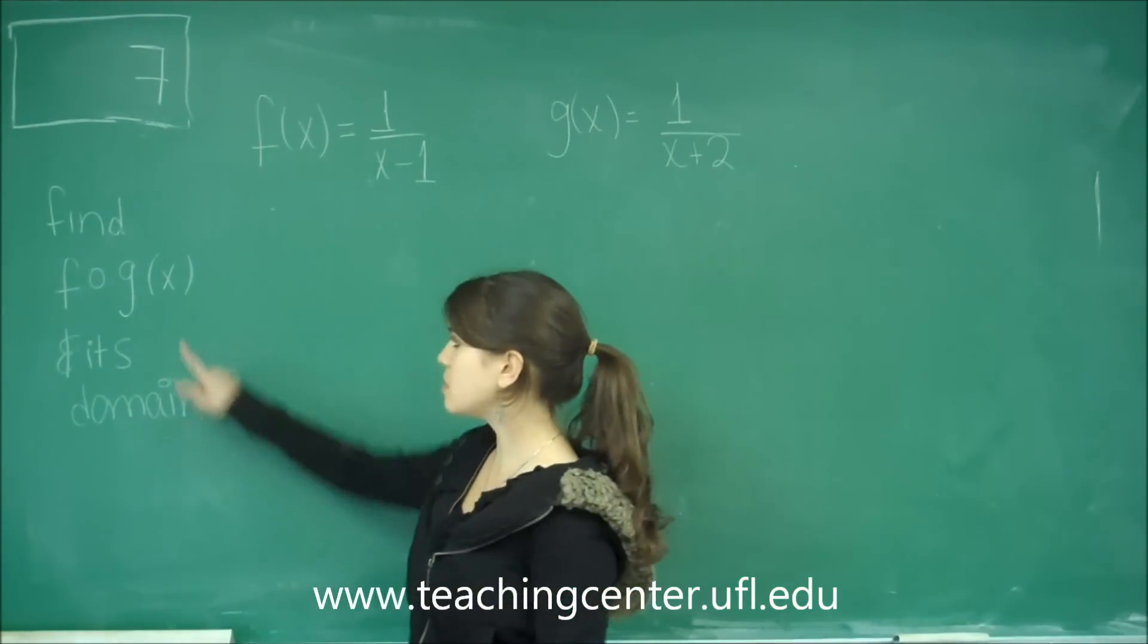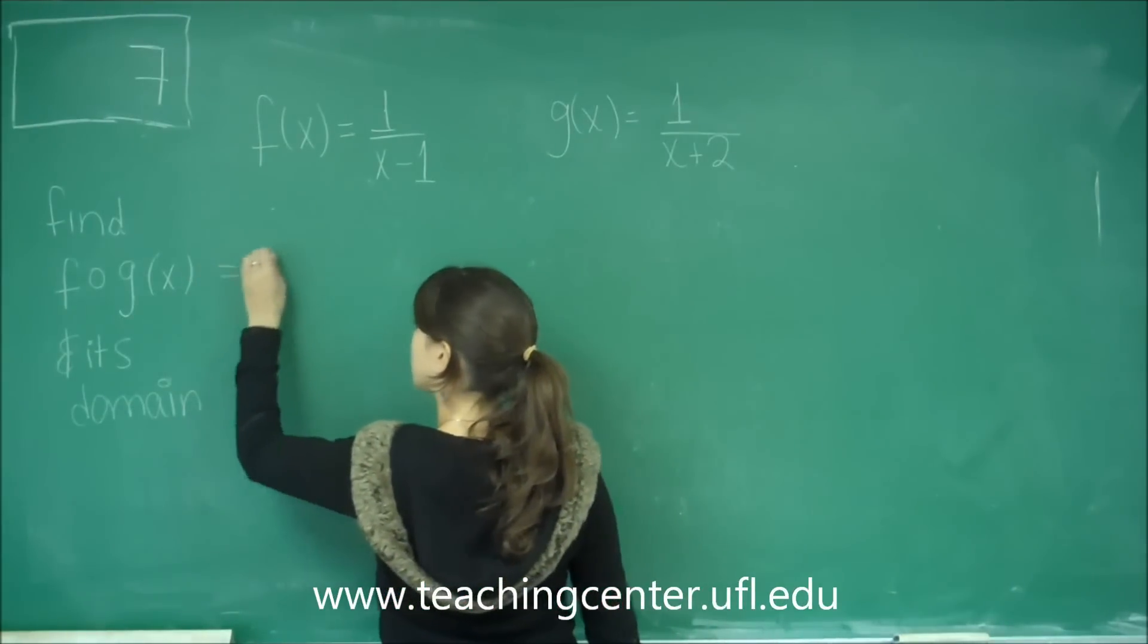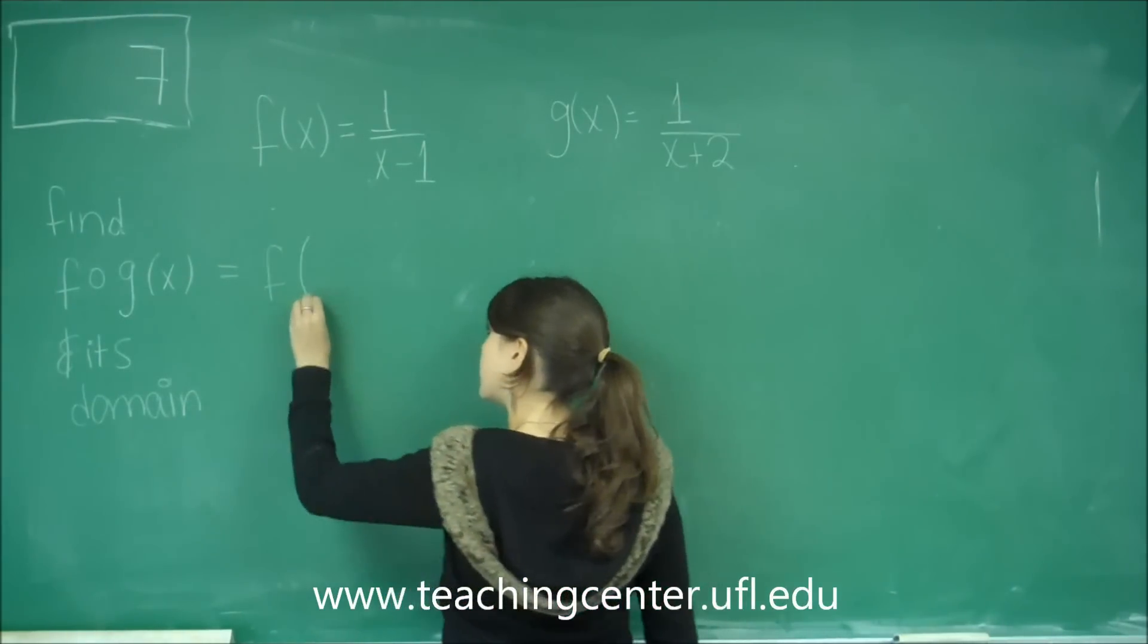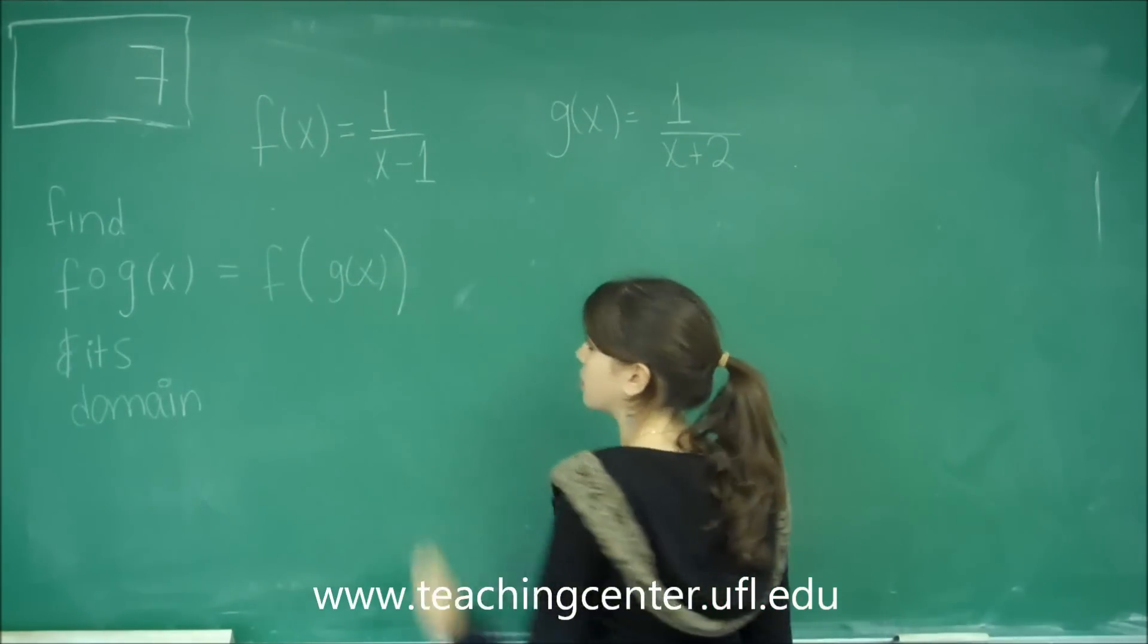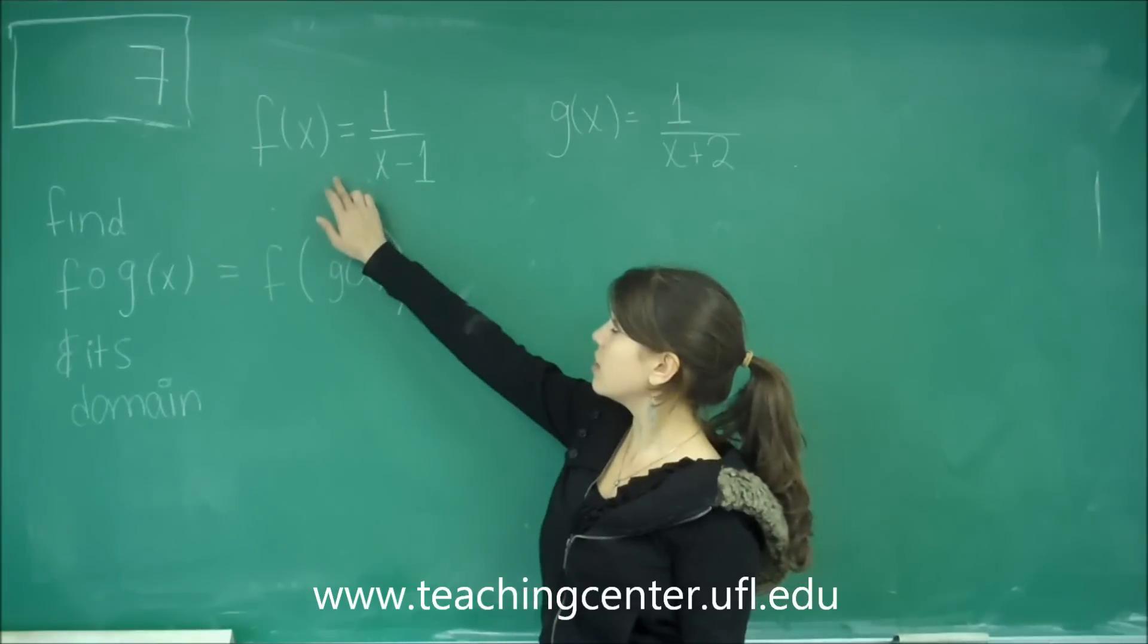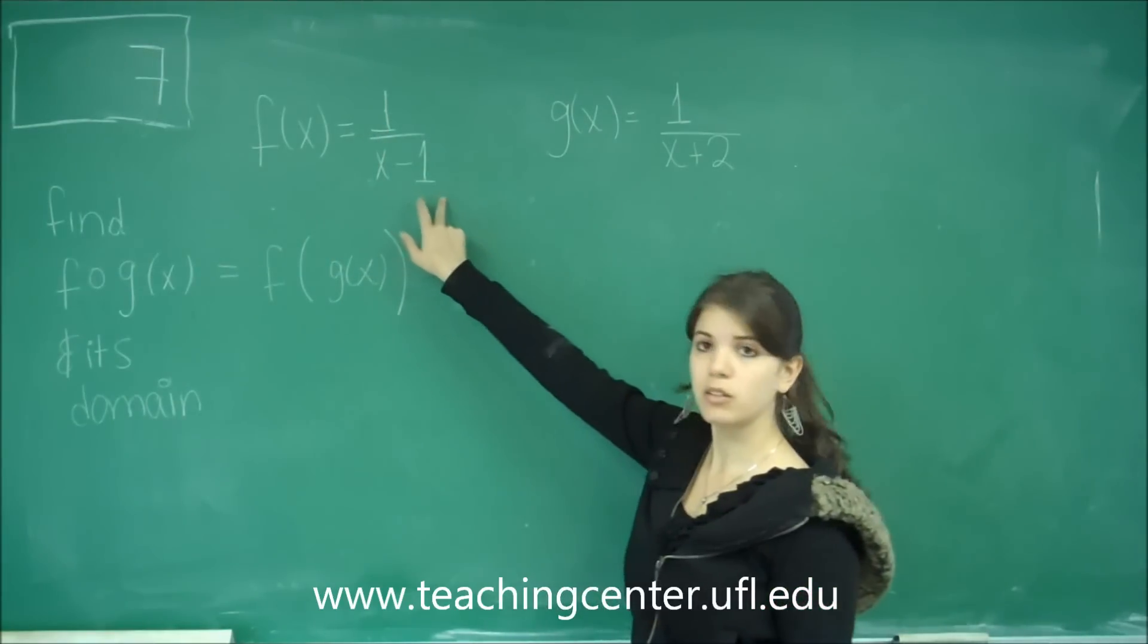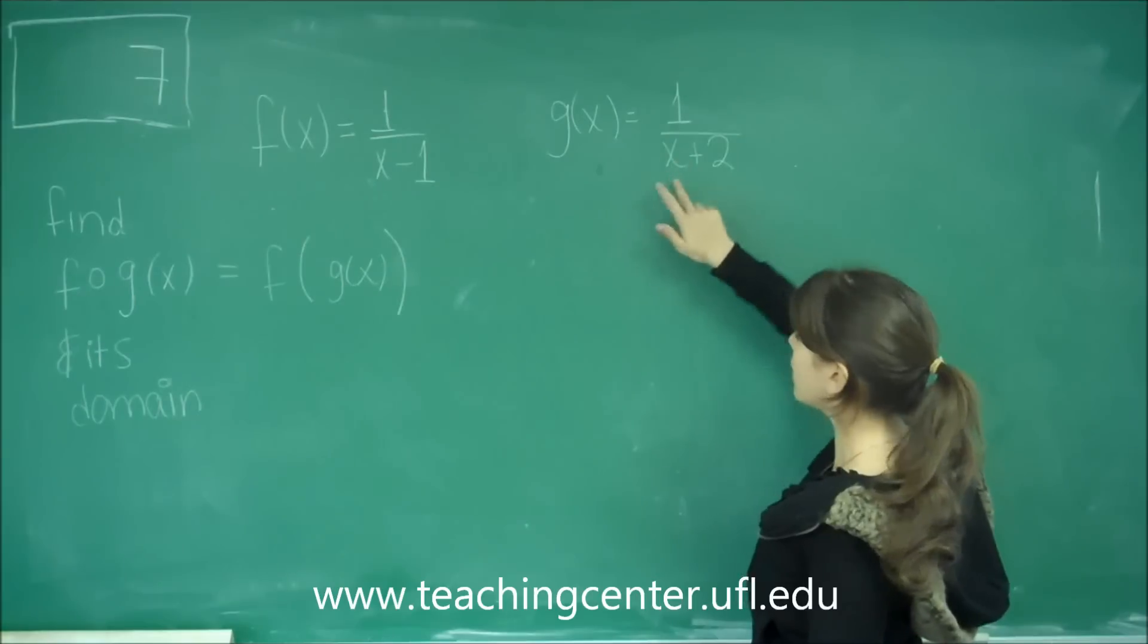Remember what this means is that we're trying to find f if we plug g of x inside of it. The function f of x is 1 over x minus 1. The function g of x given is 1 over x plus 2.